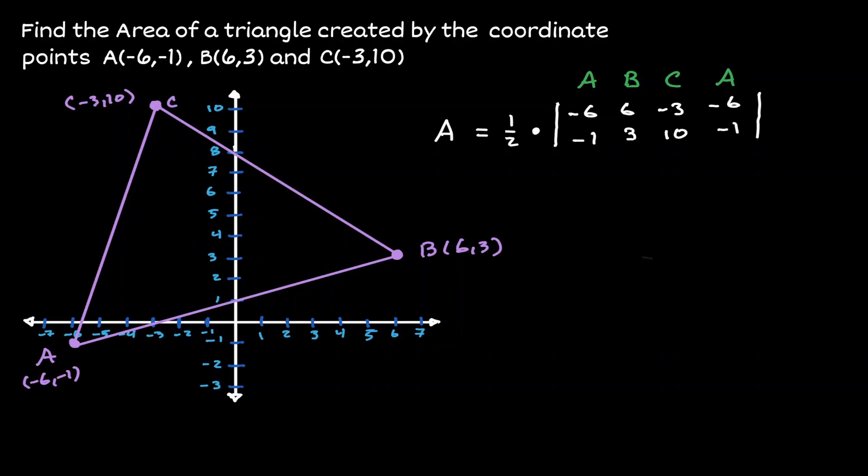Now let's talk about the operation that we'll be doing inside the absolute value. We're going to get the y value in our first point, and we're going to multiply it in a diagonal way with 6. When we multiply those two values, that is -6.